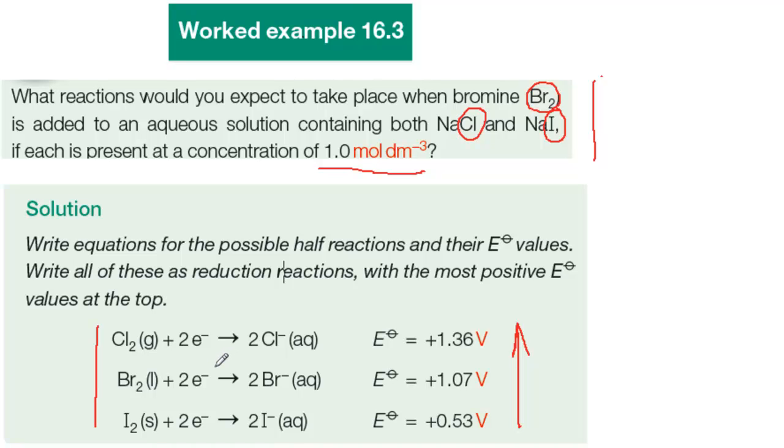If the Br2 is going to act as an oxidizer, the half reaction will have to go in the direction written. But that means that the other half reaction will have to go in the opposite direction in order to provide the electrons that the Br2 is accepting. That means that the I- will be oxidized to I2 because it's below the Br2 half reaction.